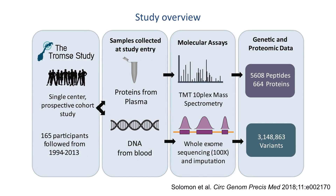In the paper under discussion, the authors integrated the blood plasma protein levels of 664 proteins from 165 participants of the TROMSA study, measured via TMT mass spectrometry, with whole exome sequencing data to identify common and rare genetic variation associated with peptide and protein levels — that is, PQTLs. They additionally used literature and database searches to prioritize putative functional variants for each PQTL.